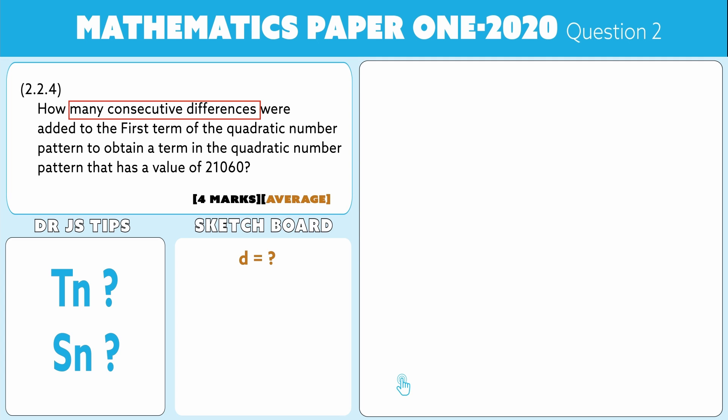So I'm actually looking here for the value of d. How many consecutive differences were added to the first term to obtain a term in this pattern that has a value of that? So they told us Tn is 21,060, and we're looking at how many of these differences were added.